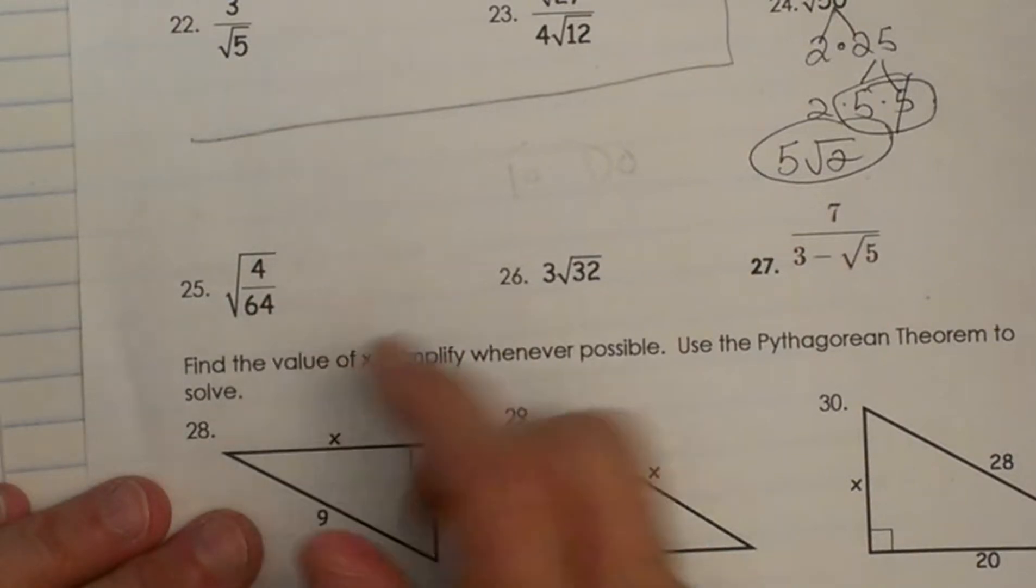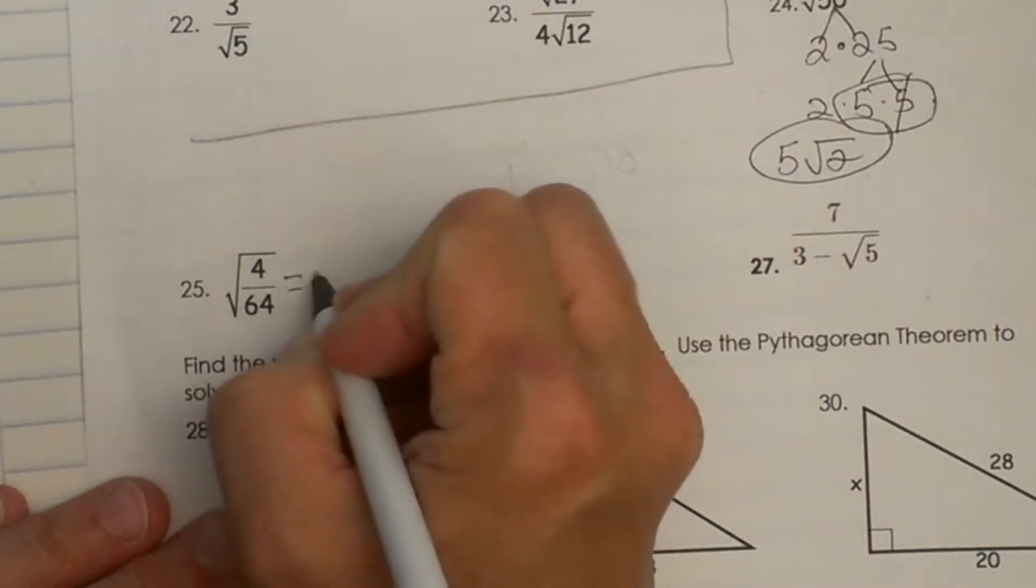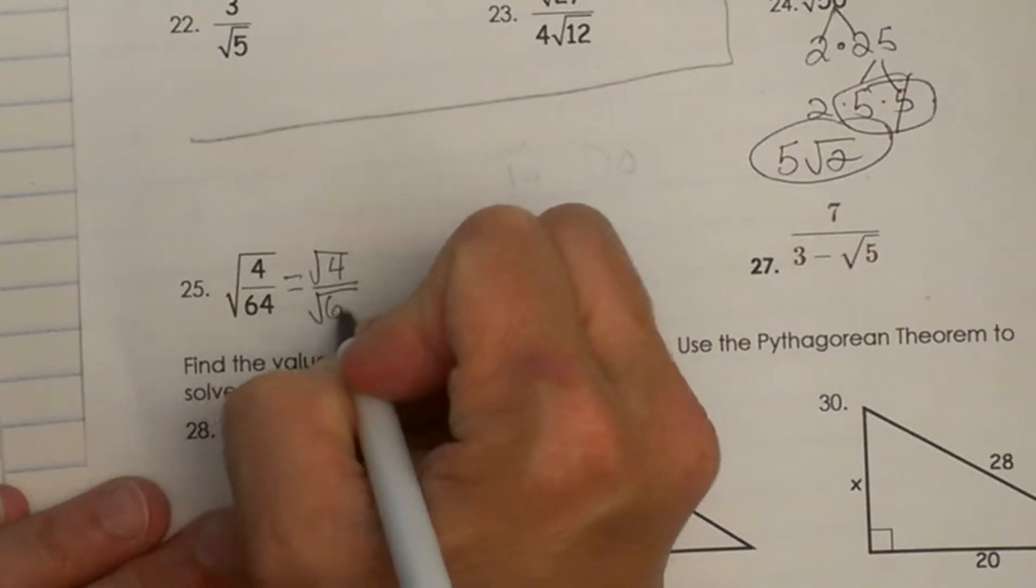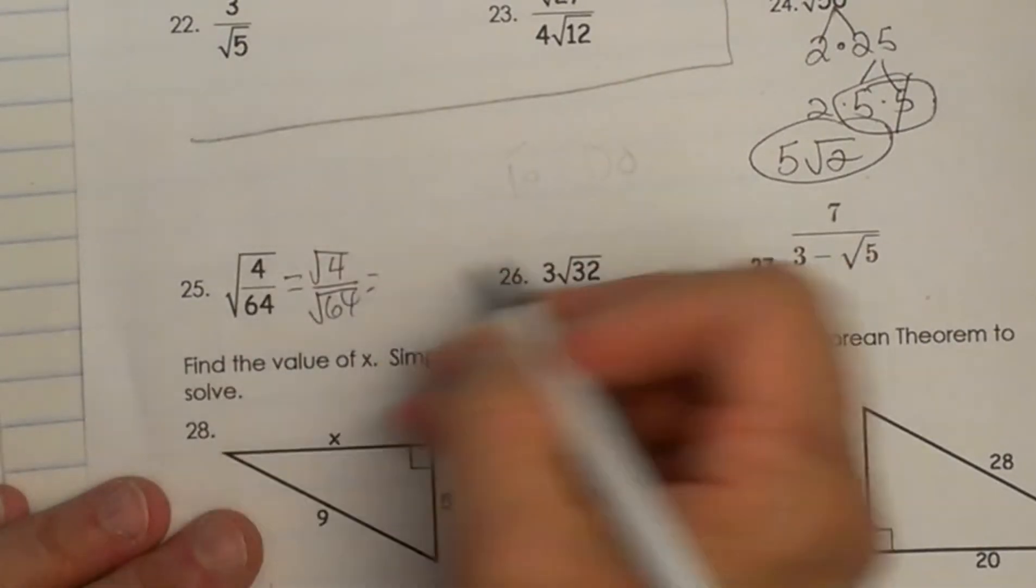But notice both of these are perfect squares. 4 is a perfect square and 64 is a perfect square. So I would tend to try to just split that square root, make it square root on the top, a square root on the bottom.